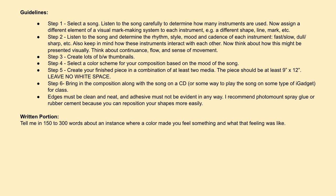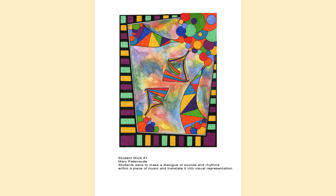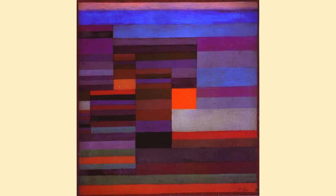For the written portion, tell me in 150 to 300 words about an instance where color made you feel something and what that feeling was like. Some of you may not be able to answer this, but just try. Here are some examples of pieces people have done in the past: one example from a student in class, and several by Paul Klee. Mark Patino did a visual representation of Lucy in the Sky with Diamonds. There are also Paul Klee pieces depicting operas — very different ways of interpreting rhythms.